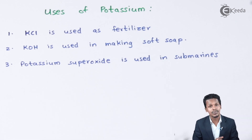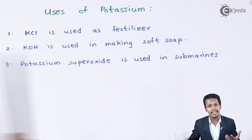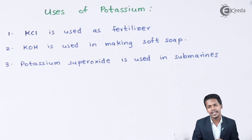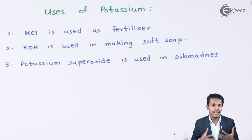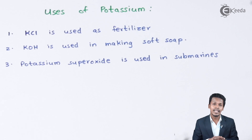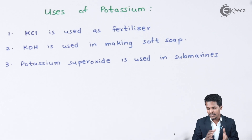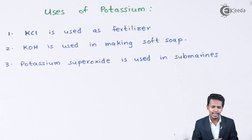Potassium superoxide (KO₂) is used as an oxygen provider in submarines. As explained earlier, submarines have high oxygen consumption, releasing more carbon dioxide and causing exhaustion. Potassium superoxide addresses this issue, and the following reaction explains its role.